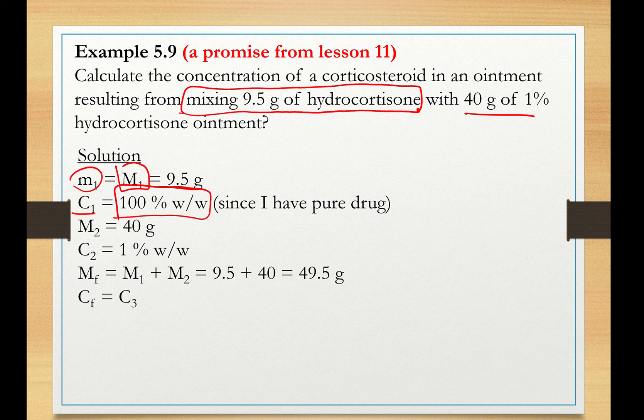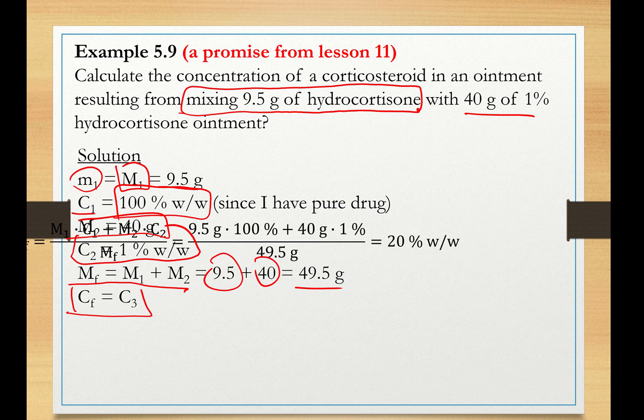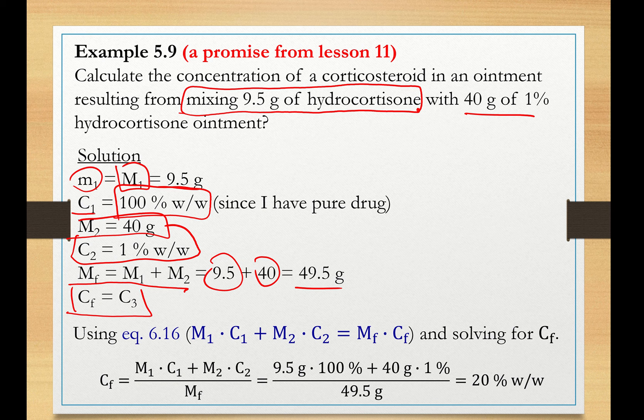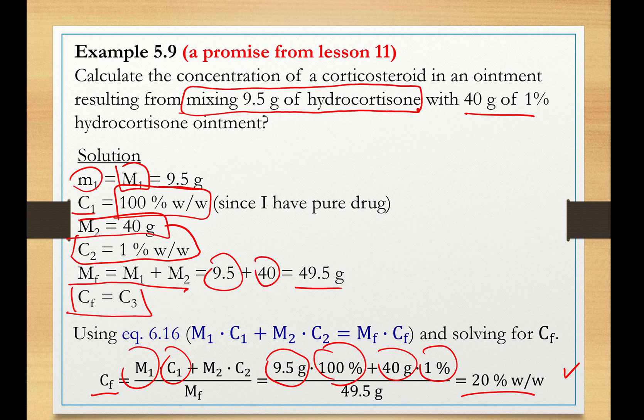M2, the mass of mixture 2, is 40 grams, and the concentration of the ointment, or mixture 2, is 1%. Now, I know that the final mass of these two mixtures is 9.5 plus 40, 49.5. We are looking for the final concentration after mixing these two. So using equation 6.16 and solving for CF, substituting the corresponding numbers here, that's mass 1, which is just the pure drug. C1 is 100%, because I only have pure drug. C2 is 1%, and mass 2 is 40 grams over 49.5, 20%. So this is a much faster and much more efficient method than the analytical method we described in Lesson 11.